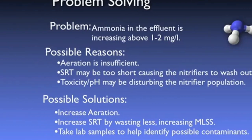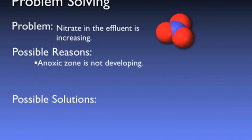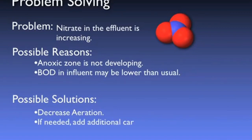For the next problem, instead of ammonia, you notice that your effluent nitrate concentration is on the rise. Well, we know that denitrification requires anoxic conditions be formed in the basin — perhaps these conditions are not being allowed to develop due to over-aeration. A more unlikely yet possible cause could be lower than usual BOD in the influent. If anoxic conditions are not being allowed to develop due to too much DO, decreasing the aeration will help restore these conditions. If the BOD loading is unusually low, there may not be enough carbon for the denitrifying bacteria to perform, and additional carbon would need to be added to the influent stream.